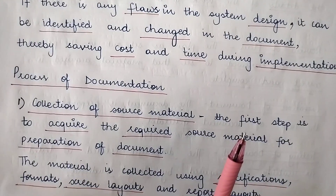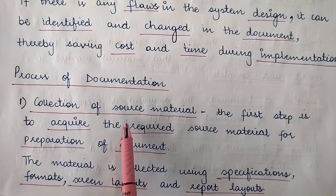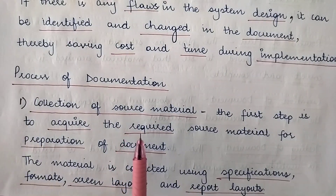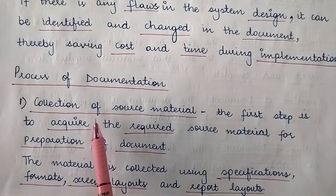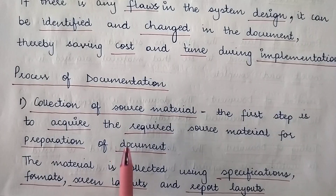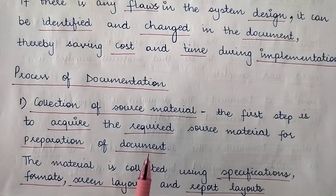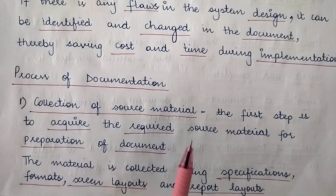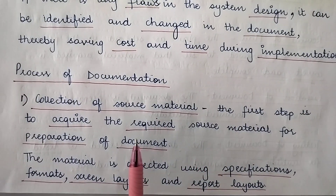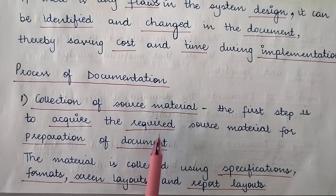The process of documentation begins with the first stage: collection of source material. When you want to write about something, you need source material to know about that thing. The first step is to acquire the required source material for preparation of the document. At each stage, different source materials are required — for example, at the requirements stage, the users themselves are the source material, providing their requirements, leading to the requirement specification document.